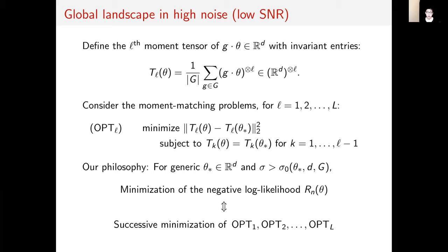To state this, let's define the moment tensor of a group orbit in R^d as the following expression T_L. It's a tensor whose entries contain invariant polynomials in θ. We define the moment matching problem OPT_L to be the problem of minimizing the difference, the L2 norm, between the Lth moment tensor of θ and the Lth moment tensor of the unknown signal θ*, subject to all lower degree tensors already matching.